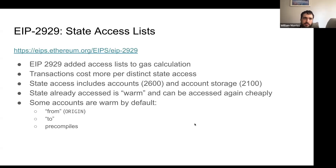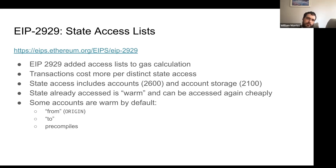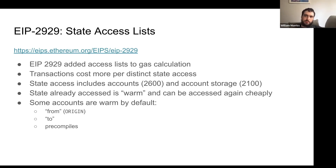EIP 2929 added state access lists to the gas computation of a transaction. So the more state a transaction accesses — distinct state — the more transactional costs. Previously, all accesses would cost the same whether you'd accessed it or not, and so all addresses were cold. This EIP also defined a few accesses that would be warm from the start — that is, accessed already at the start of the transaction. They're the from account, which is the origin, the two accounts specified in the envelope, and the set of all pre-compiles.